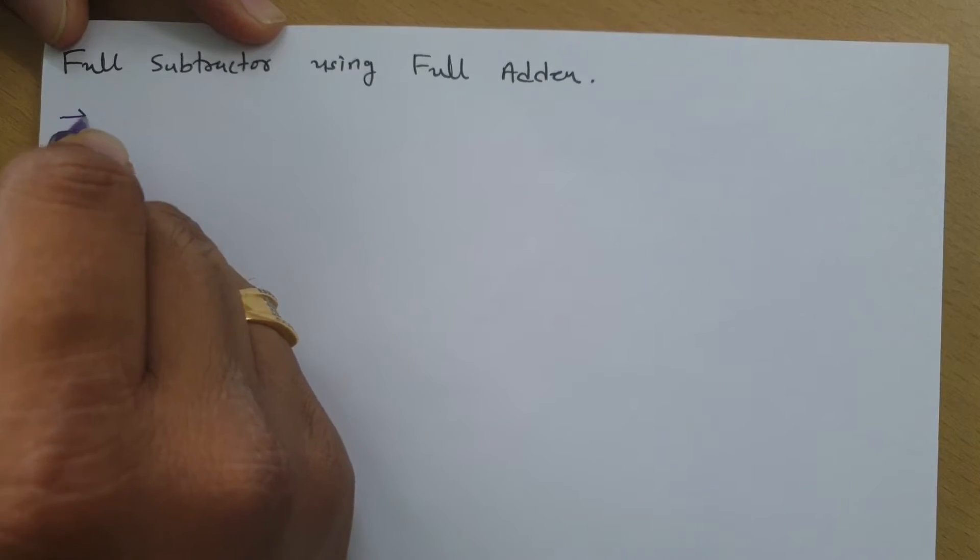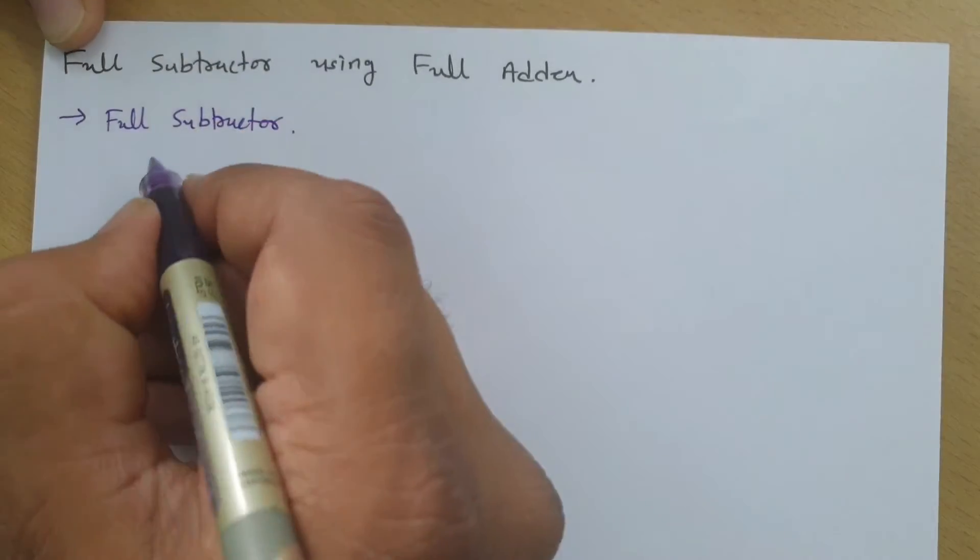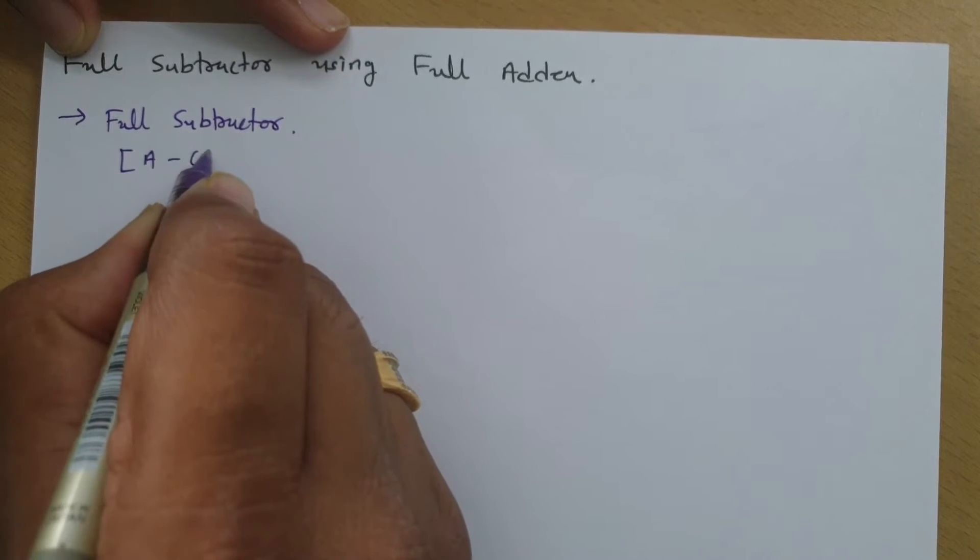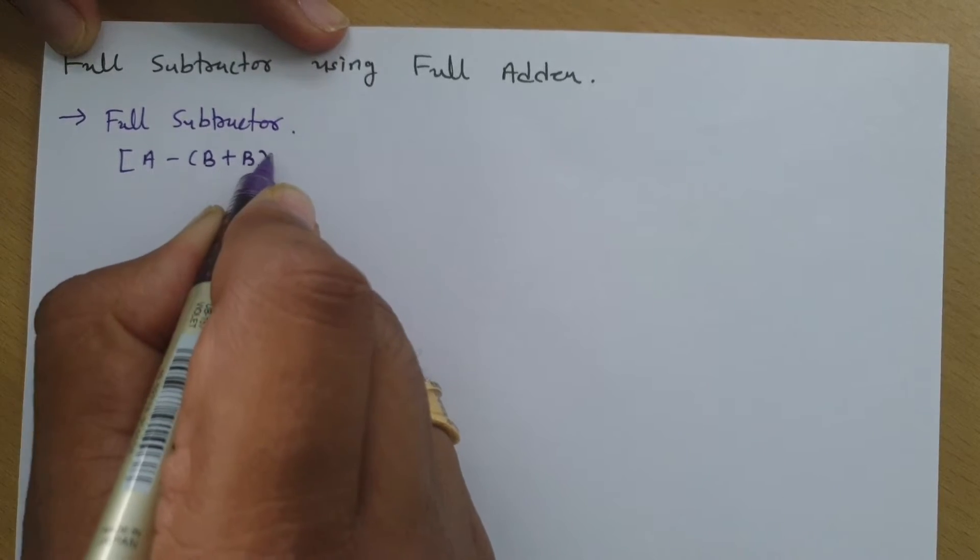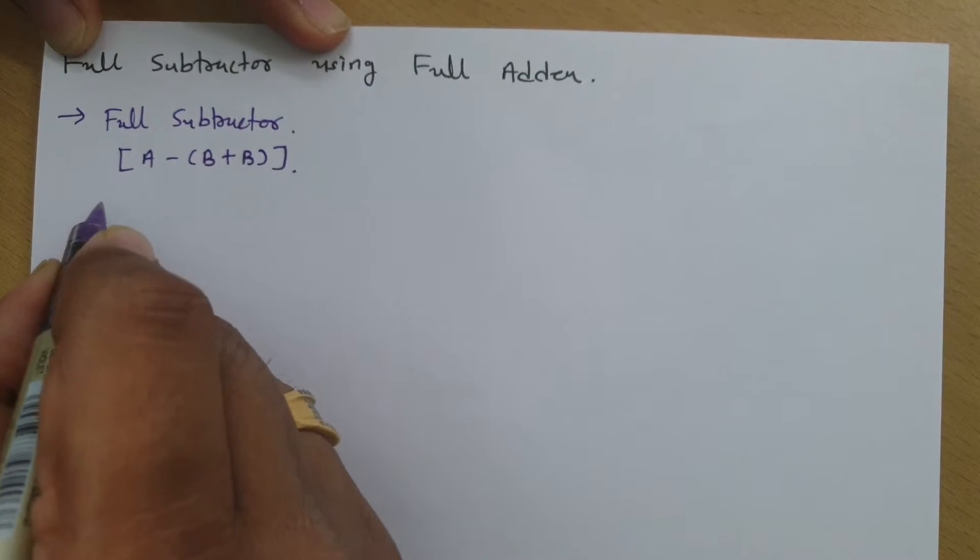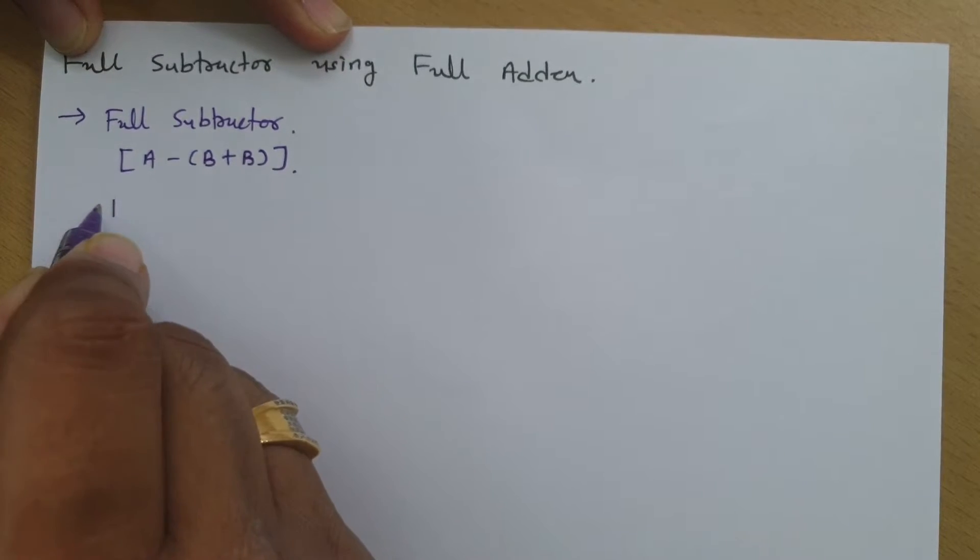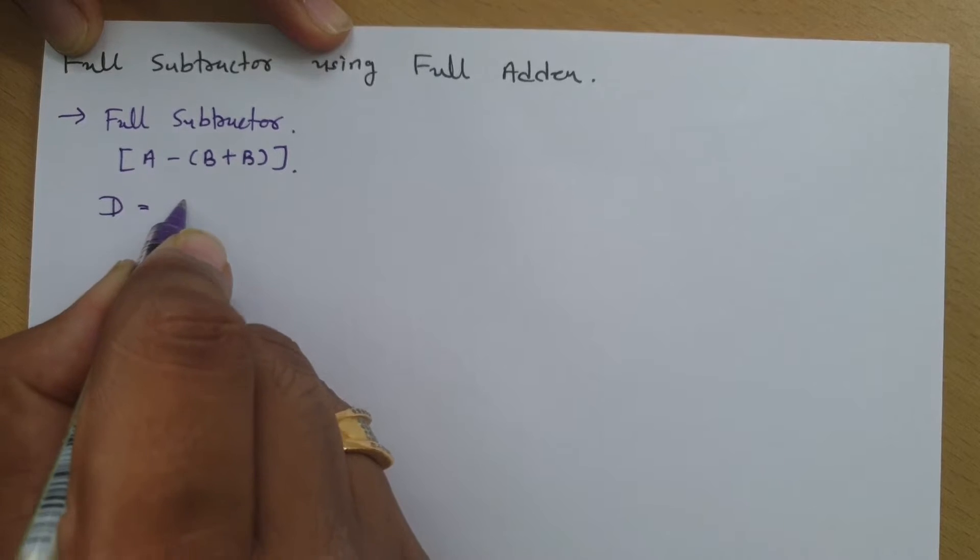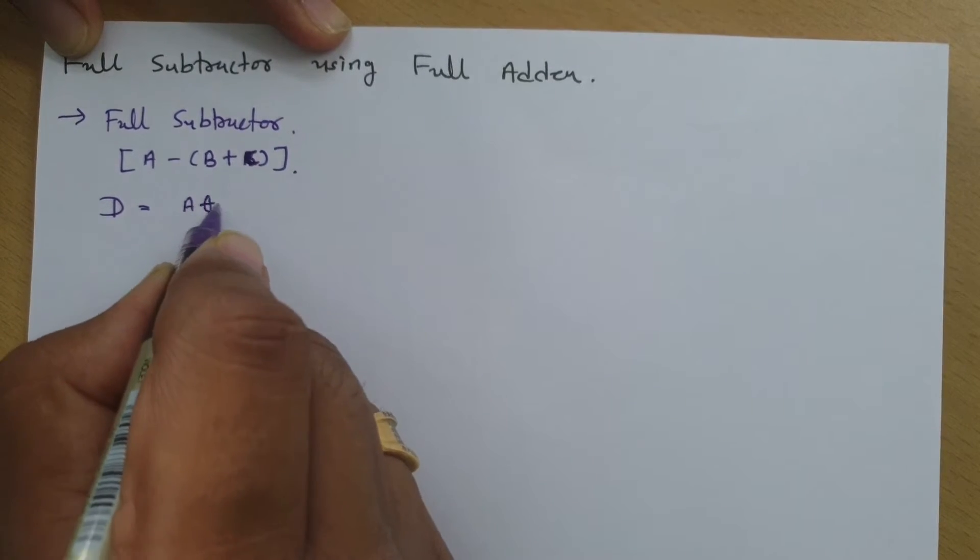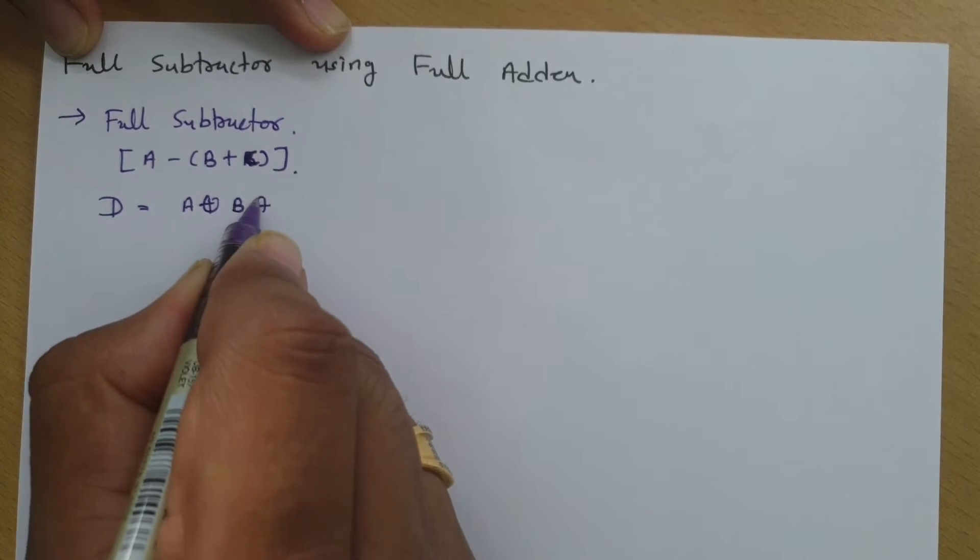So when we talk about full subtractor, as if we want to perform A minus B plus C, then we can say difference D that will be A XOR B XOR C.